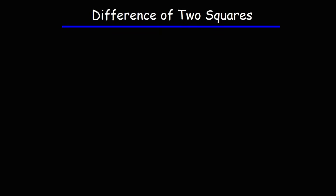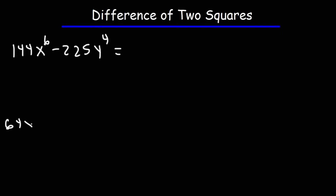Now let's move on to the next problem. Try factoring 144x to the 6th minus 225y to the 4th, and also 64x to the 4th minus 625y to the 8th.